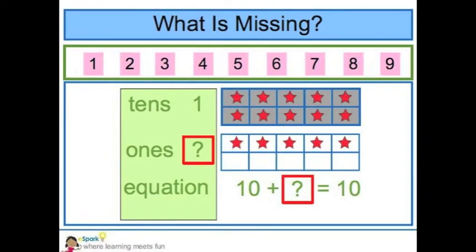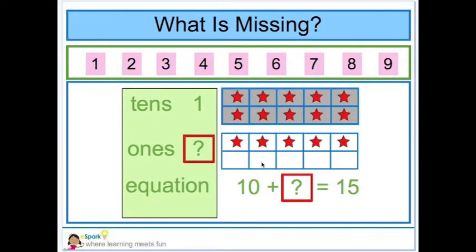Now, let's see if we can figure out what numbers are missing. If I count the stars in my second 10 frame, I have 5. So that means I have 5 ones and 10 plus 5 equals 15. I have 15 stars.